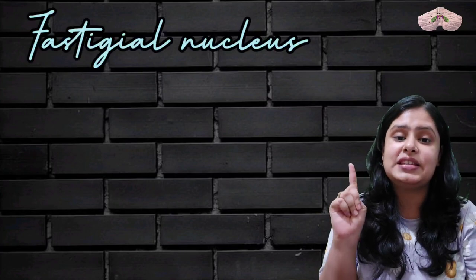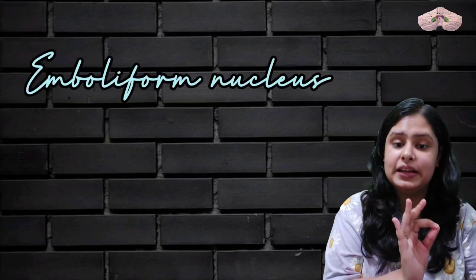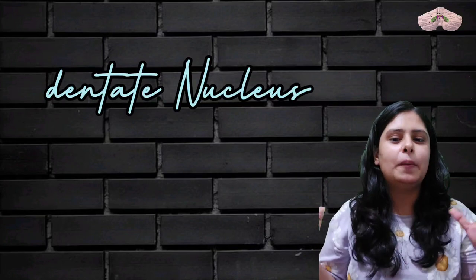So there are four types. The first one is the fastigial nucleus, the second is the globose nucleus, the third is the emboliform nucleus, and the fourth is the dentate nucleus. So I hope you have the names of these four.